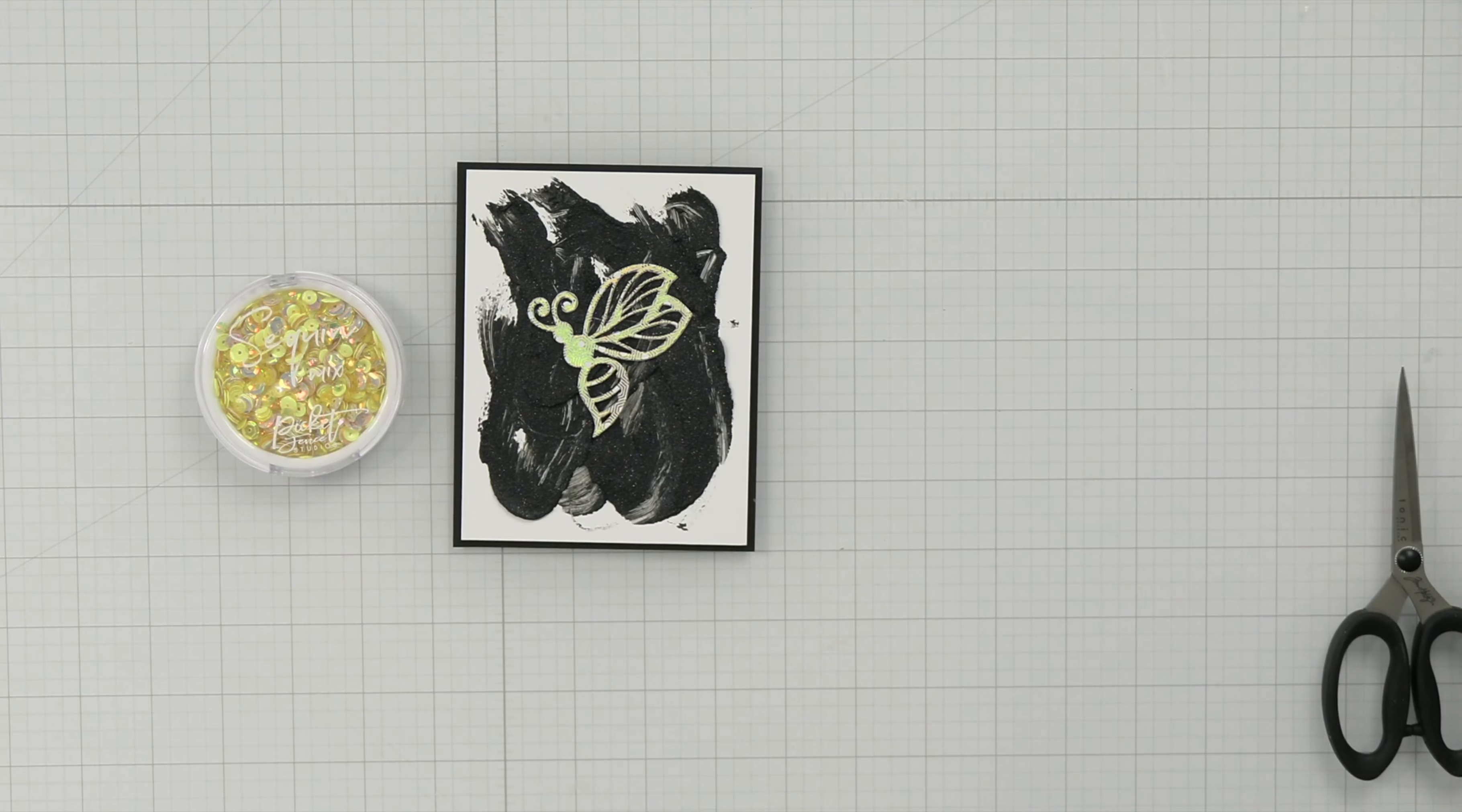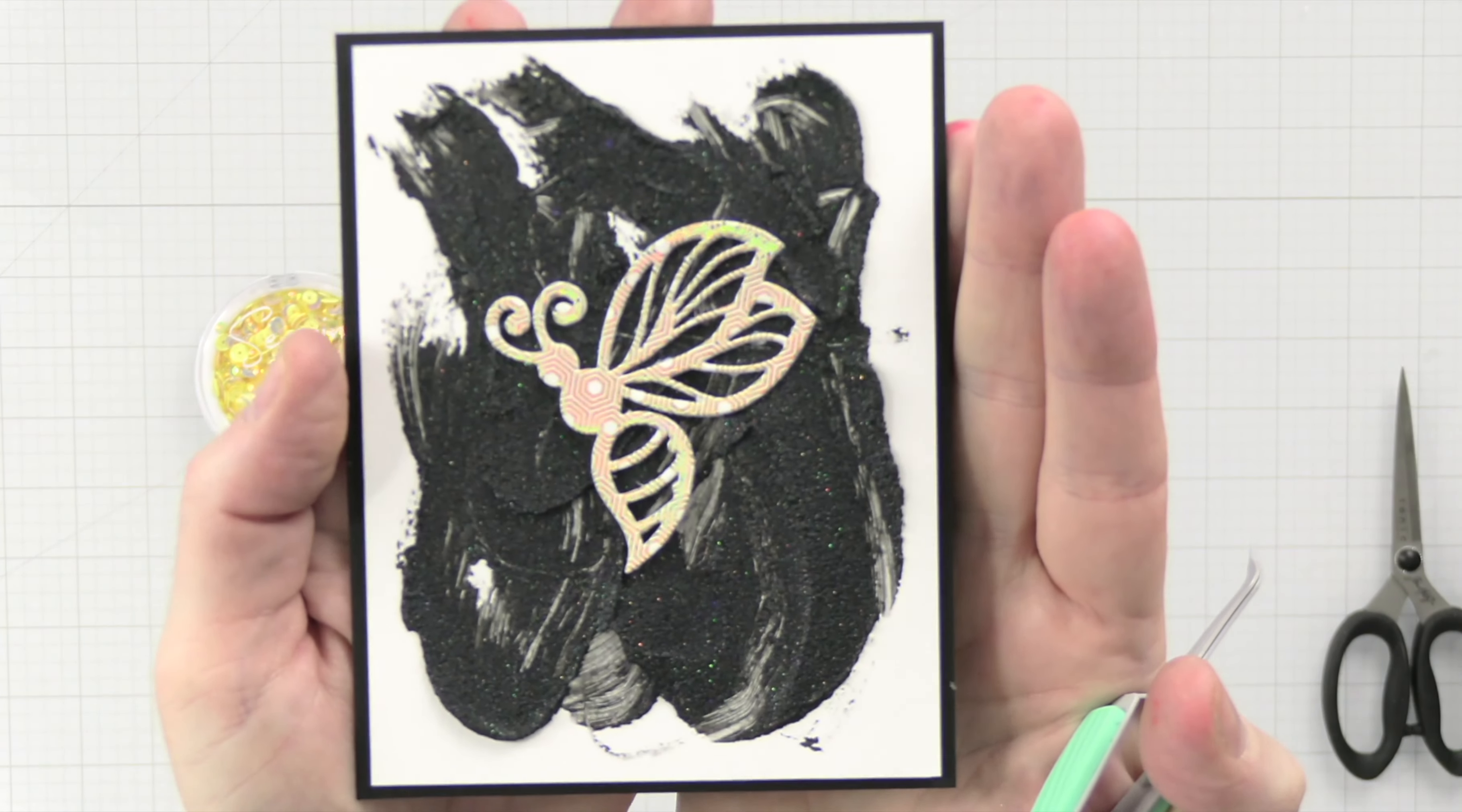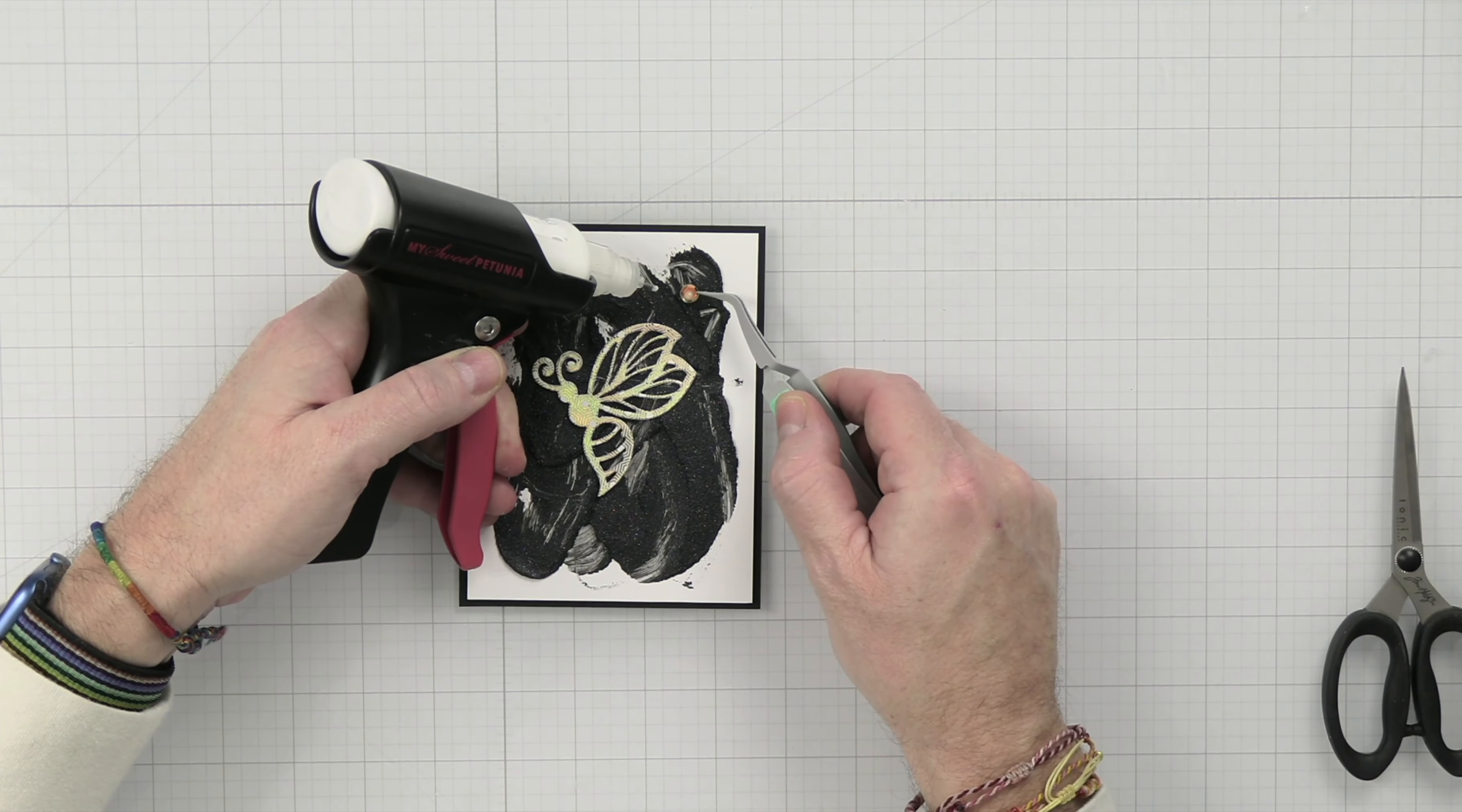All we have left to do here is put a little bling on this, even though the bee is foiled and you can see the foil in there. So we're just going to add a little bling. We're going to be using this All About Yellow. And we're just going to go ahead and get some sequins glued onto the card here.